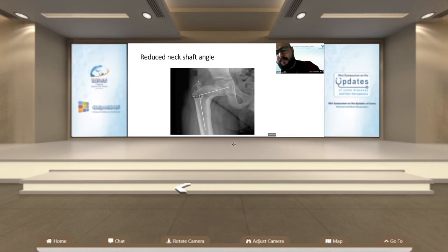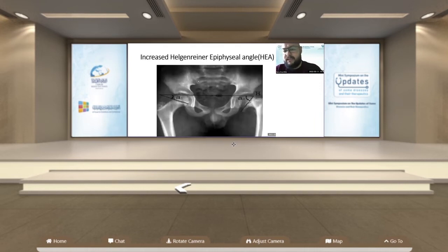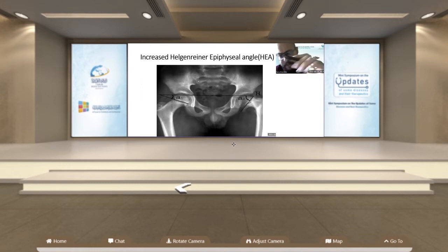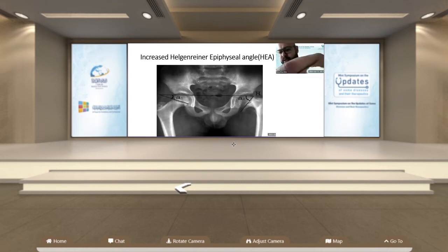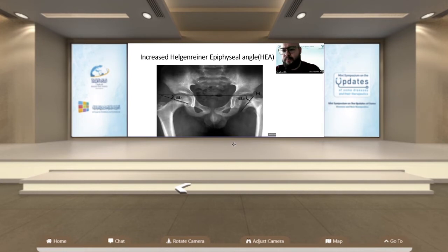This is how it looks — the neck shaft angle is reduced beyond 120 degrees so that the greater trochanter is high riding. When the child tries to open his legs in abduction, it gets impinged — the greater trochanter hits the pelvis, so it cannot complete the outside motion of the hip. There is also the Helen-Reiner epiphyseal angle, between the triradiate cartilage of the pelvis and the epiphyseal plate of the neck, which is increased on the affected side.